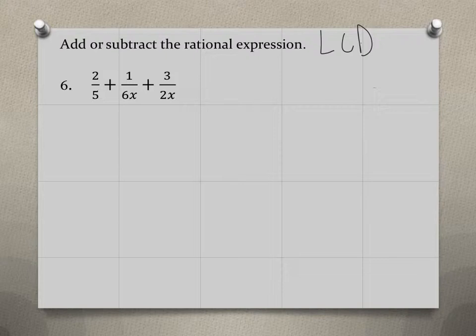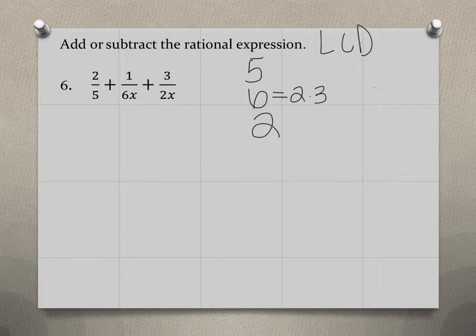So what I mean is if we have 5, the prime factorization for 5 is 5. If we have 6, the prime factorization for that is 2 times 3. And if we have 2, the prime factorization is just 2.